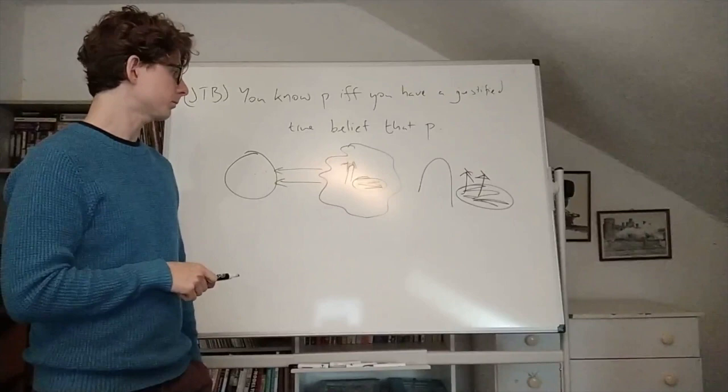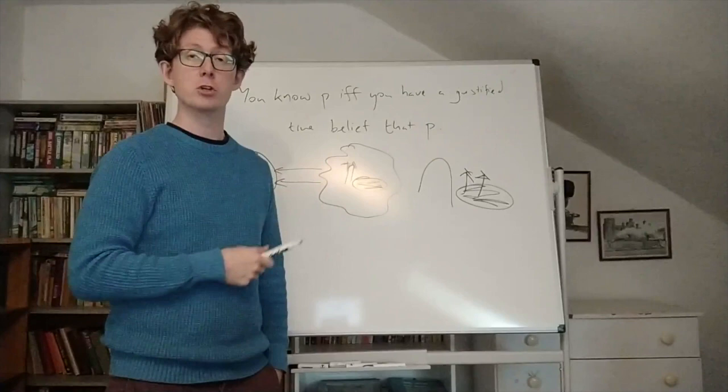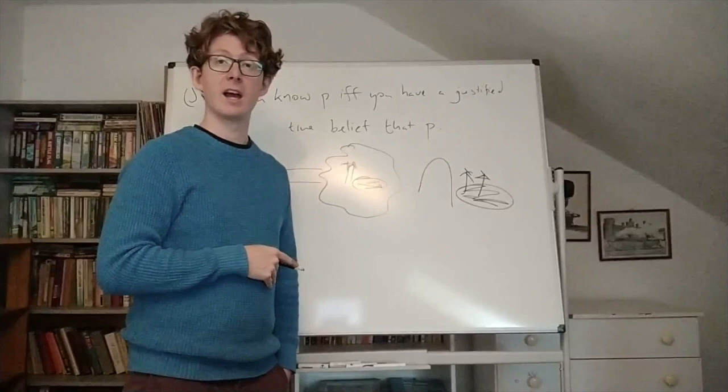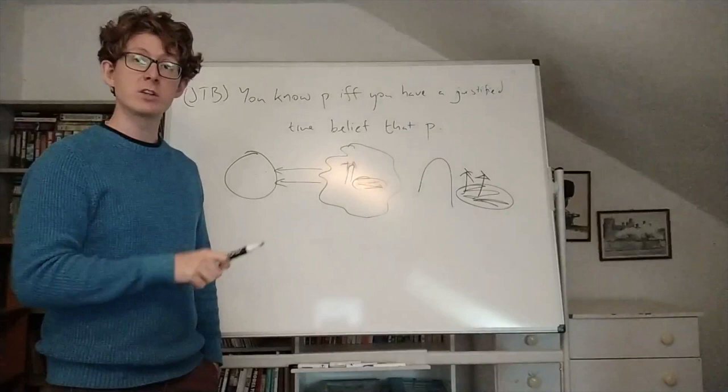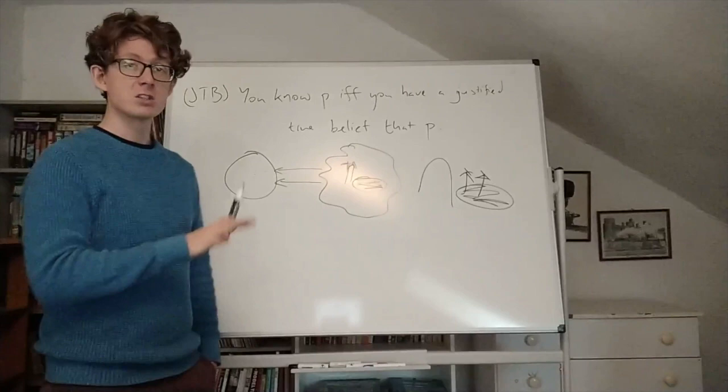Now let's look at this case and see what does the justified true belief theory say about it? Is this a case where you know that there is an oasis in front of you, according to the theory? And it looks like, according to the theory, this is indeed a case where you know there is an oasis in front of you. So let's go through each of the conditions and see why.